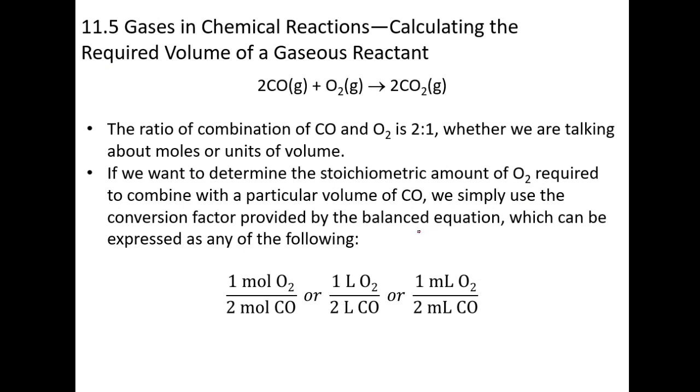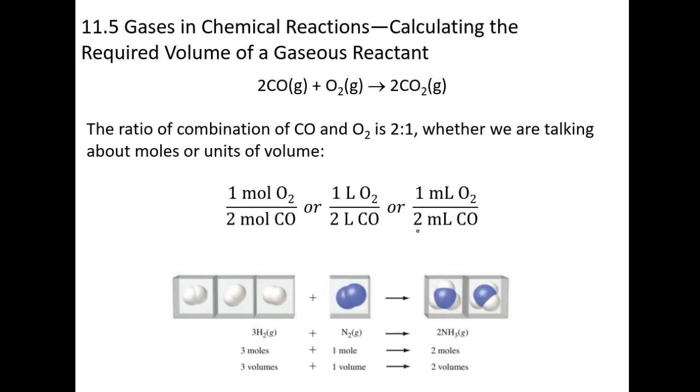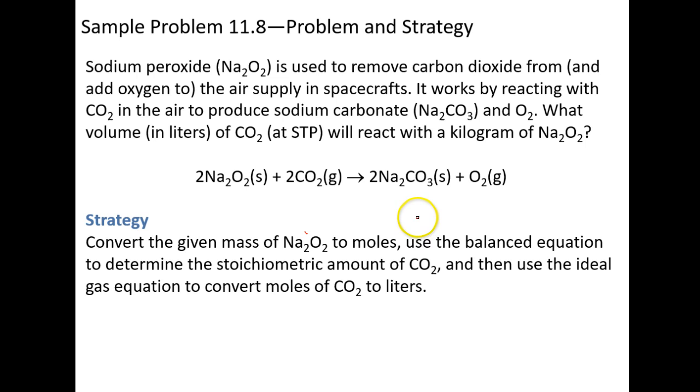This is kind of a continuation. This is also doing mole-to-mole ratios, which we basically did. I don't think there's really anything here. You can do this problem on your own. But basically, it's exactly what we just did. You have sodium peroxide is used to remove carbon dioxide from the air-supplying spacecraft. It works by reacting with CO2 and this and that. What volume of CO2, so I'm looking for liters of CO2 at STP? Remember what STP was? That was a temperature of 273 and a pressure of 1 atmospheres. If you react with a kilogram, they've made it a little bit easier, but whatever. 1,000 grams of Na2O2.